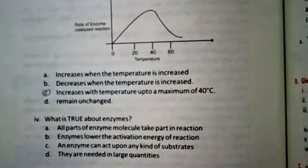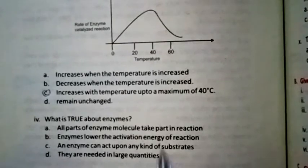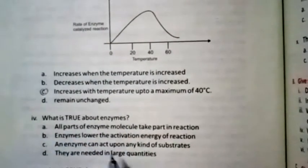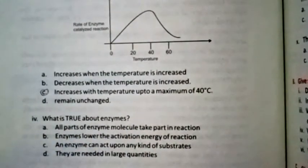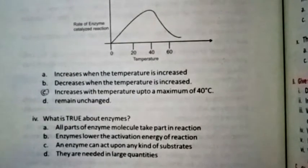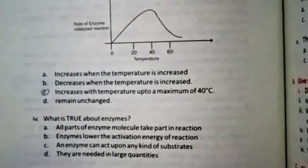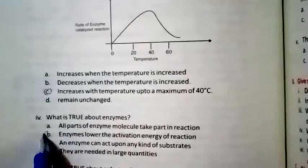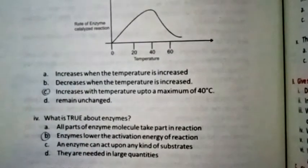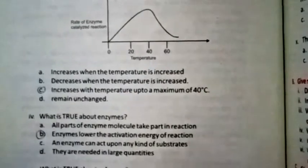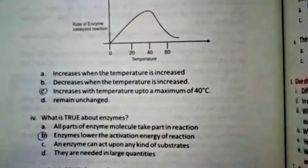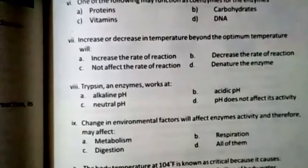Question four: What is true about enzymes? The right option is B — enzymes lower the activation energy of the reaction. Question five: What is true about cofactors? The right option is B — they help enzymes in their activity.